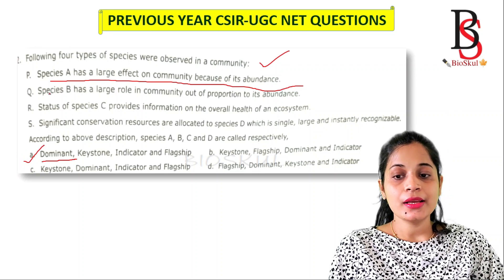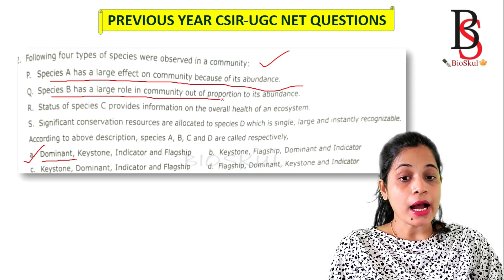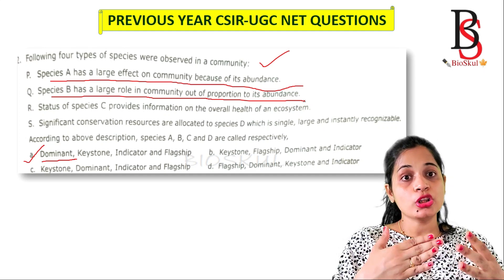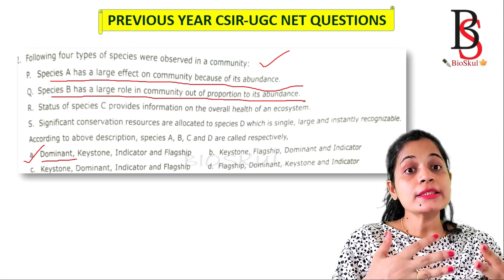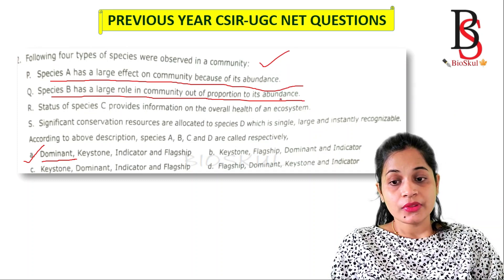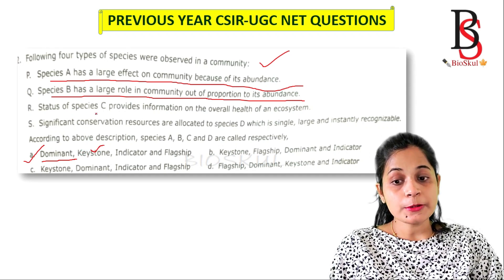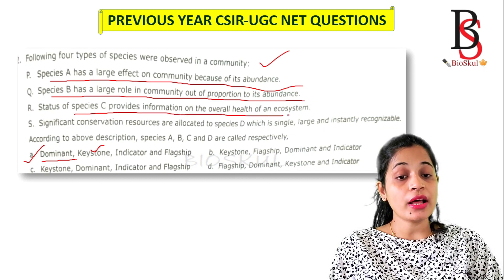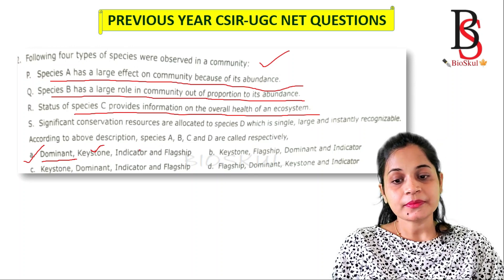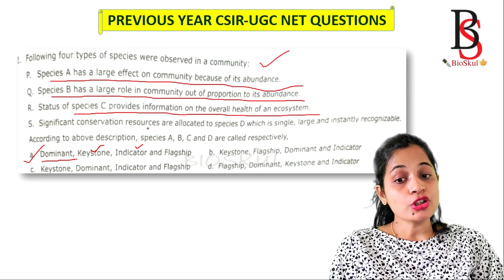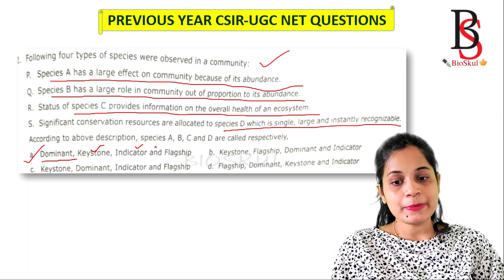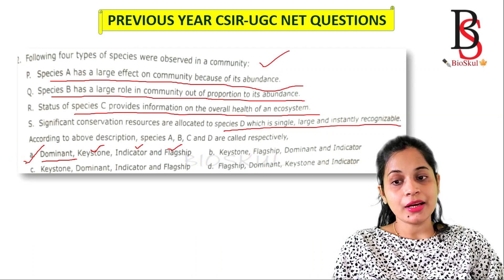Let's also review the other options. Species B has a large role in the community out of proportion to its abundance — this is the keystone species, defined as a species that has a larger effect on the ecosystem not proportional to its abundance. Species C's status provides information on the overall health of the ecosystem — that is the indicator species. Significant conservation resources are allocated to Species D, which is single, large, and instantly recognizable — that is the flagship species. The correct answer is option A.